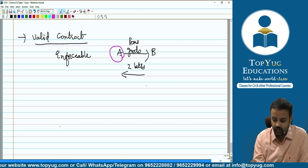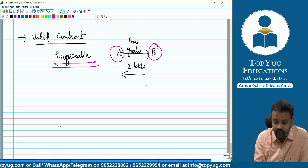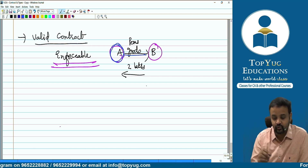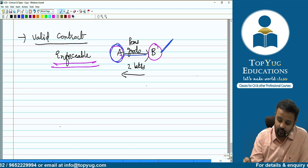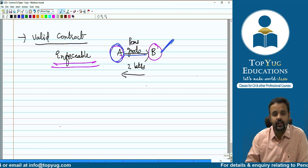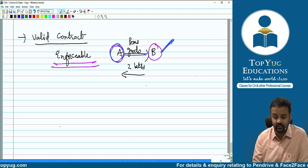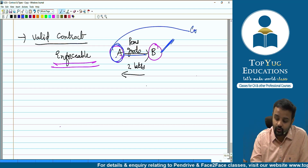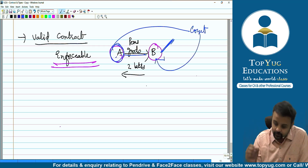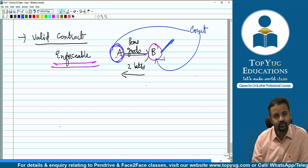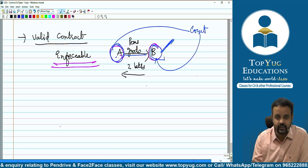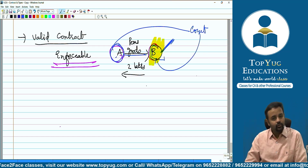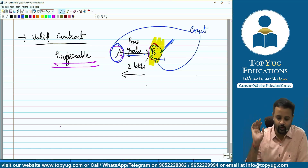For example, if A has agreed to supply pens to B and B will pay rupees 2 lakhs — all essential elements of Section 10 are satisfied and any special requirement is also satisfied. The contract becomes valid. If A supplies the pens but B does not pay, A can go to court and the court can compel B to pay the 2 lakhs. This is a valid contract — enforceable in the court of law.